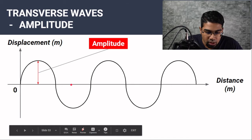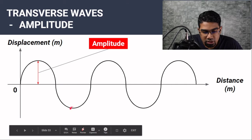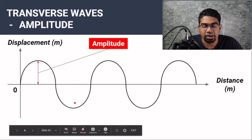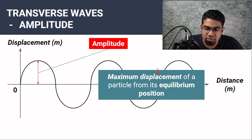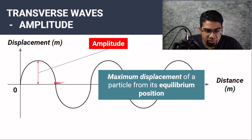This is an amplitude, and this is also an amplitude. Although the trough represents a negative displacement, amplitude is a scalar quantity, so we ignore the negative. Amplitude is defined as the maximum displacement of a particle from its equilibrium position.